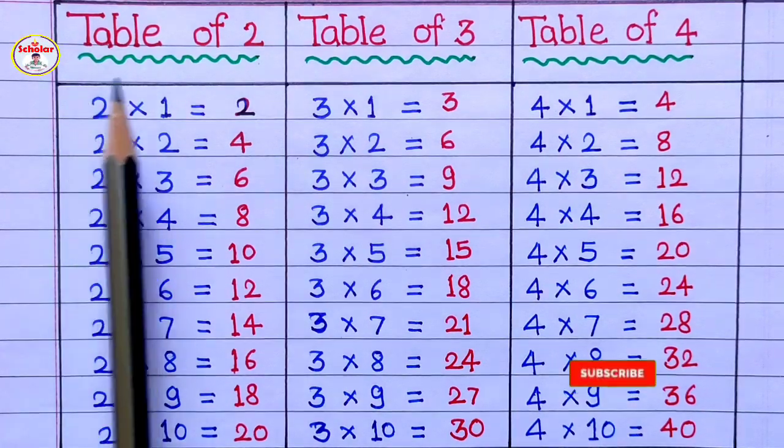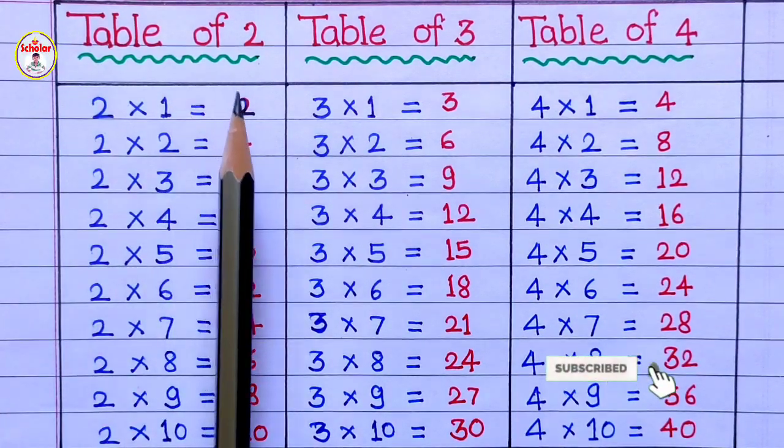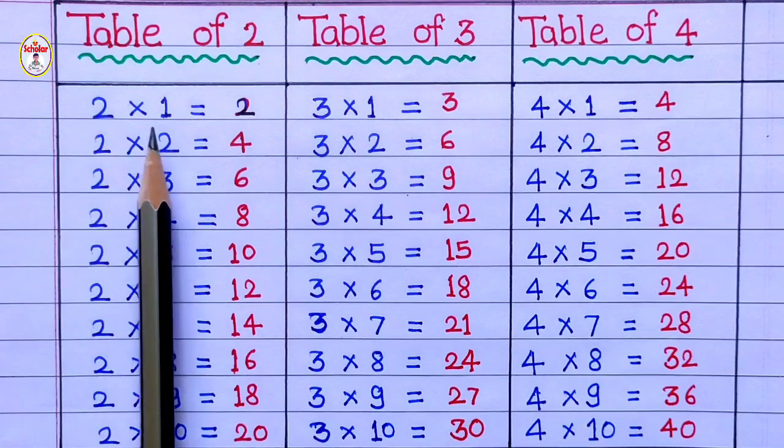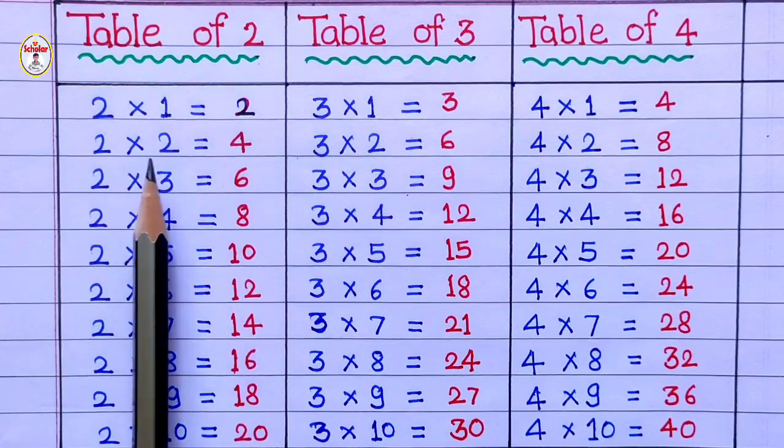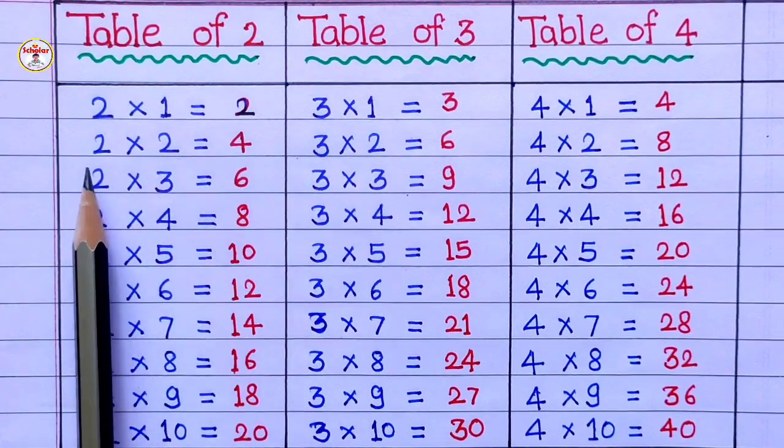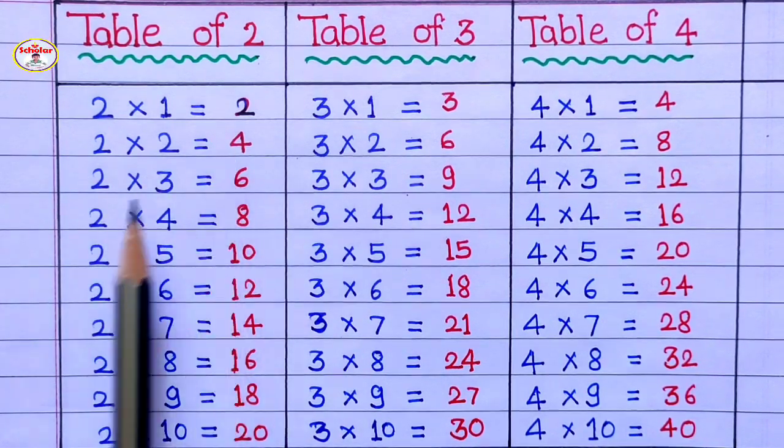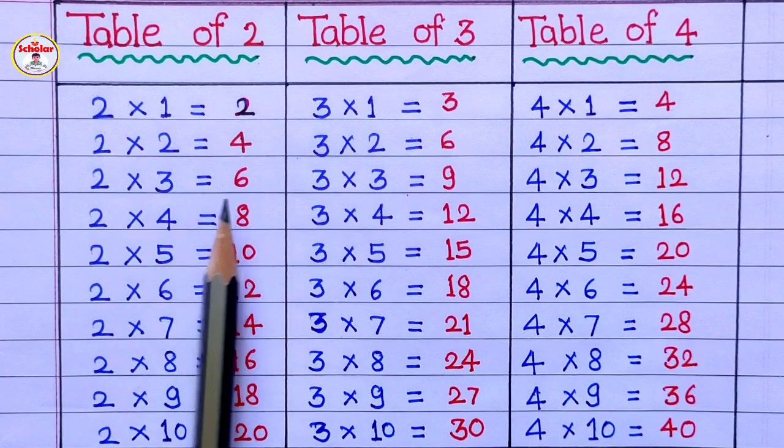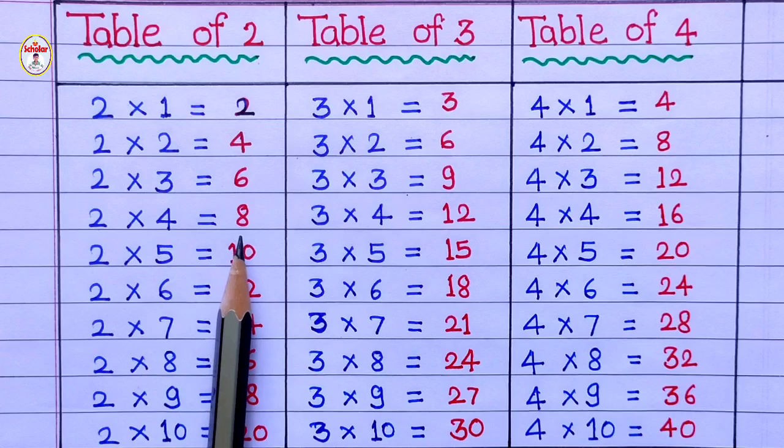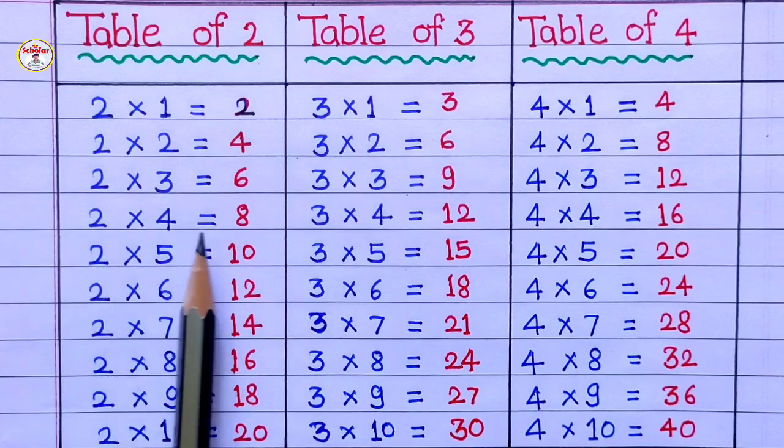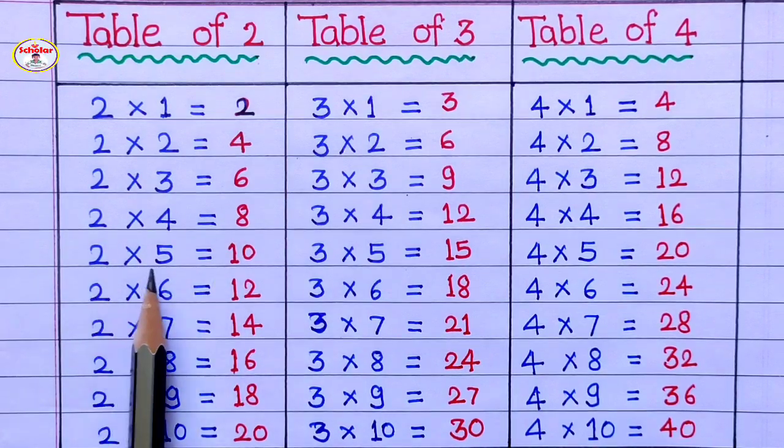Table of 2: 2 1's are 2, 2 2's are 4, 2 3's are 6, 2 4's are 8, 2 5's are 10.